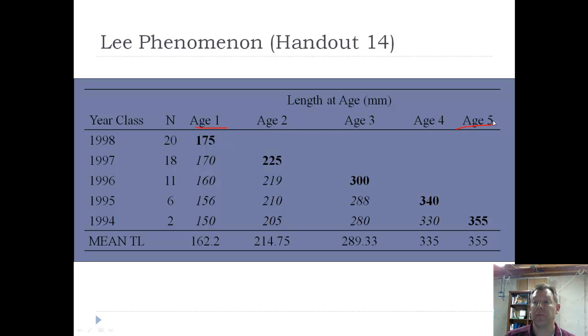And if we look at these old fish, when they were captured, they averaged 355 millimeters. They're older, they should be bigger. As you go back and you see how big they were at each age, let's go all the way back to age one. At age one, those fish were on average 150 millimeters.